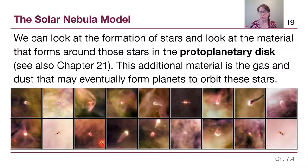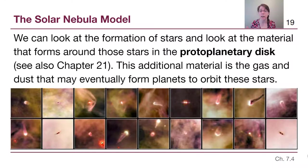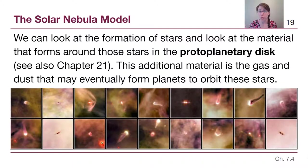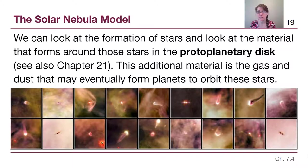Just like we talked about star formation back in Module 5, we can look at other systems to get snapshots of their formation process. The extra material flattens out into what's called a protoplanetary disk, and that additional gas and dust can eventually form planets.